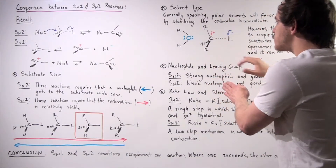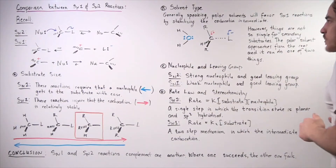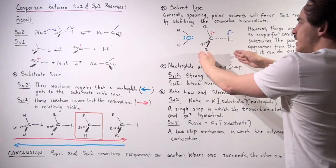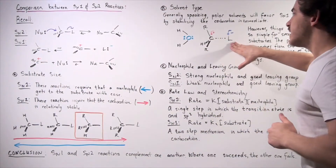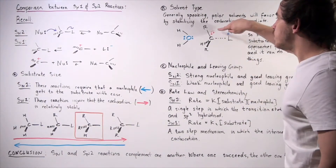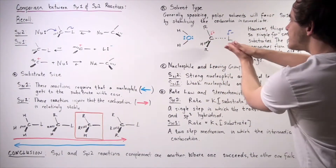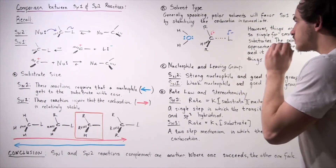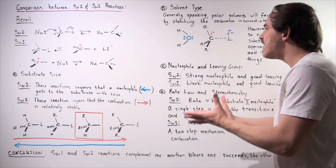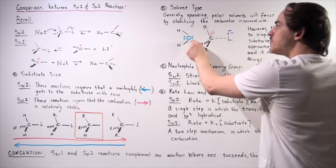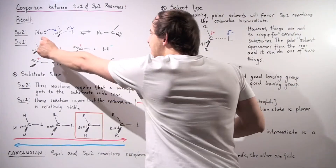Suppose we have a secondary substrate and a polar solvent such as water. As the SN1 reaction begins and the leaving group starts to leave, the leaving group develops a partial negative charge and the carbon develops a partial positive charge. As this group is leaving, the polar water molecule approaches from the rear — because the other side is sterically hindered by the leaving group. When the water molecule approaches, it can either stabilize the partial positive charge with its partial negative oxygen, or it can use its lone pair to attack the carbon via an SN2 reaction.